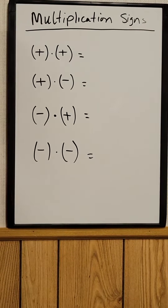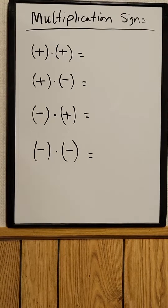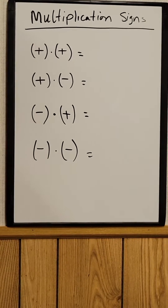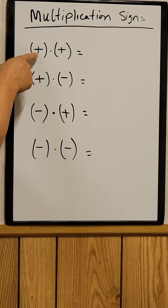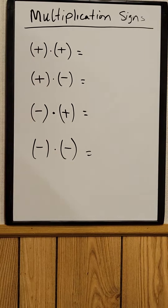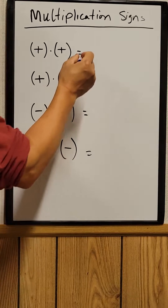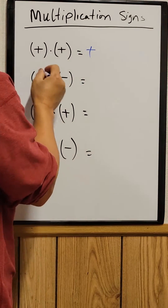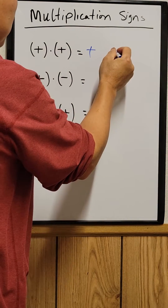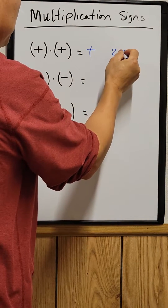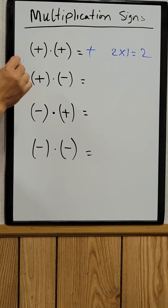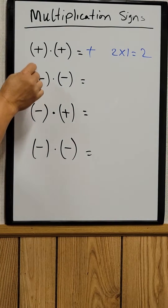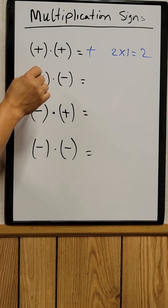Today we try to understand the multiplication math sign. For example, you take a positive times a positive, the answer is always positive. So for example, 2 times 1 equals 2.